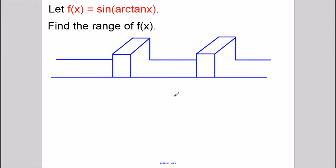The analogy I like to use when I teach this concept is think of an assembly line with more than one machine on it. When we evaluate a composition function we always move from right to left. So when we send x through this composition function it's going to reach arctangent of x first, and then after it passes through arctangent we're going to have some output value that's going to go into sine. So we could label the second part here sine of x.